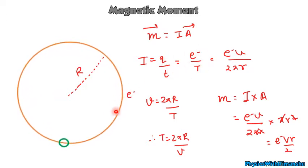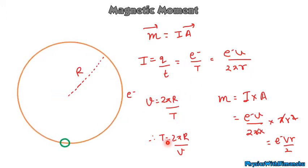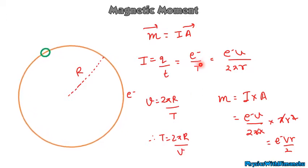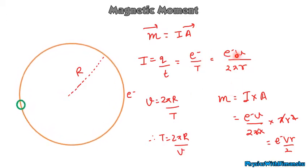T is the time period of one revolution. Velocity v = 2πr/T, so T = 2πr/v. Substituting this, current I = ev/(2πr).